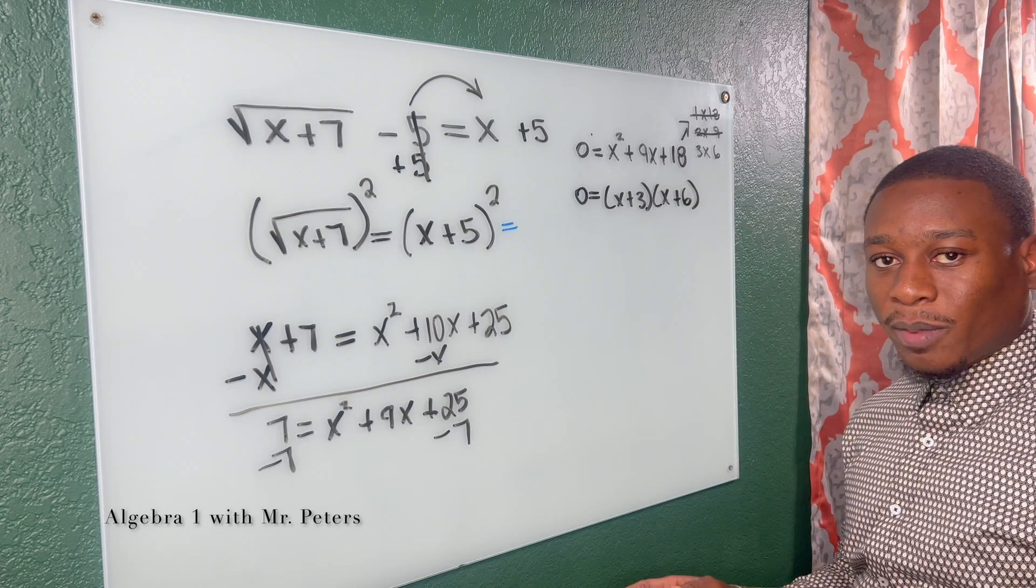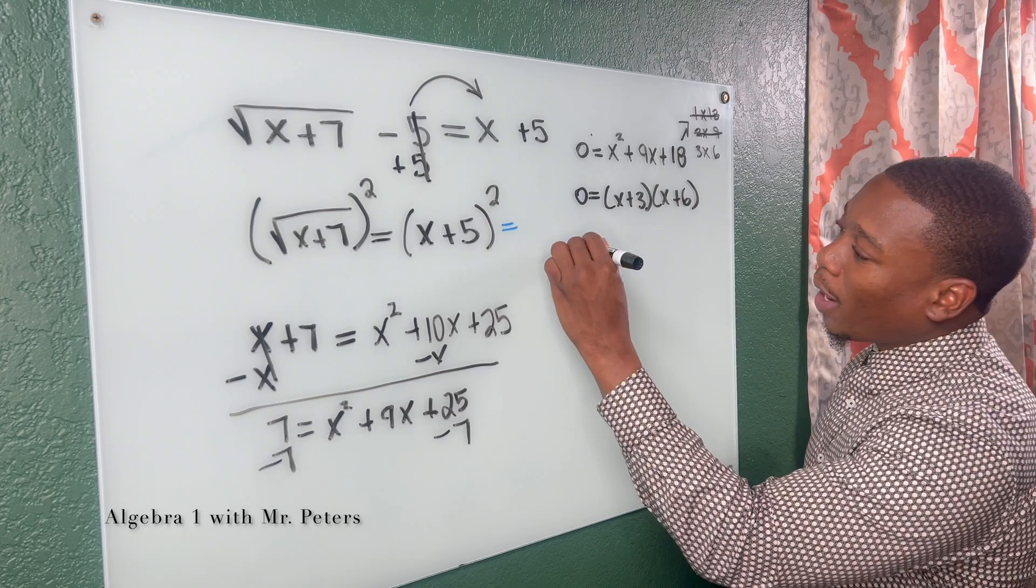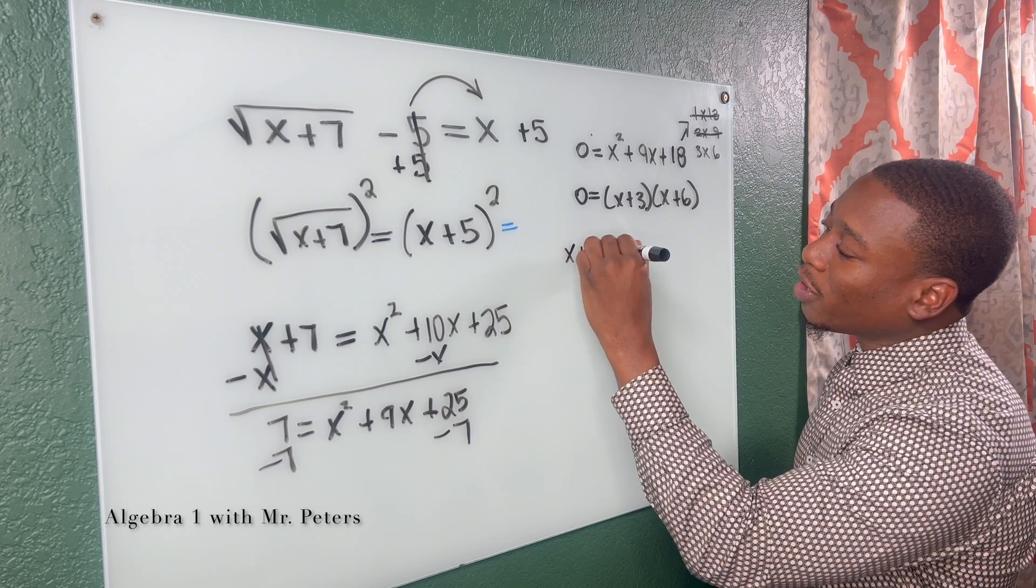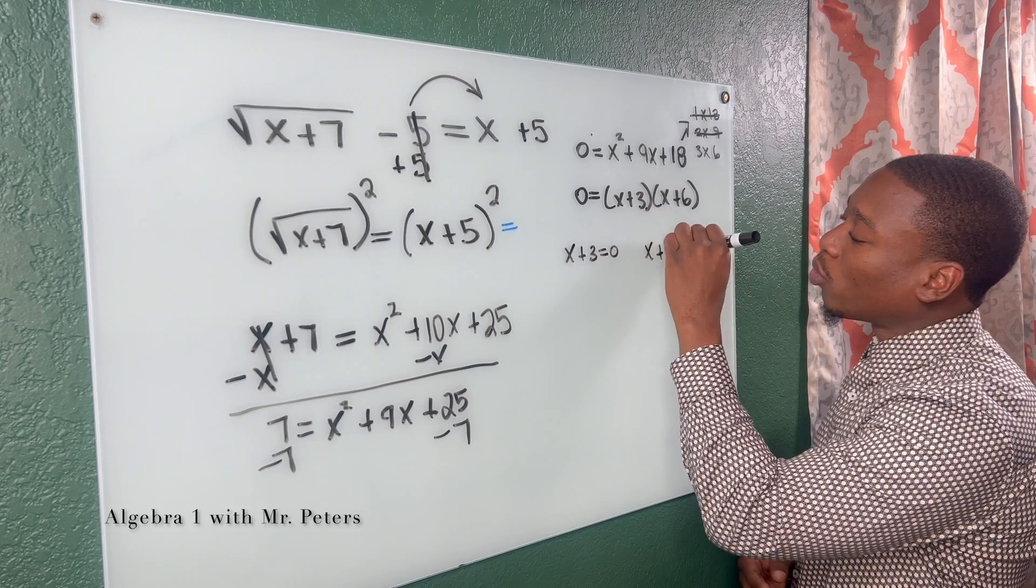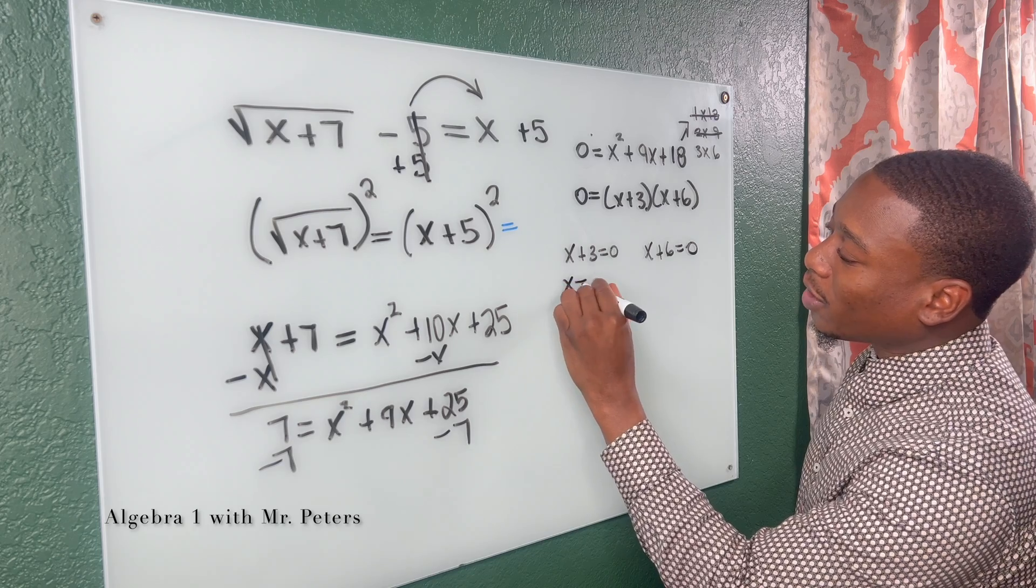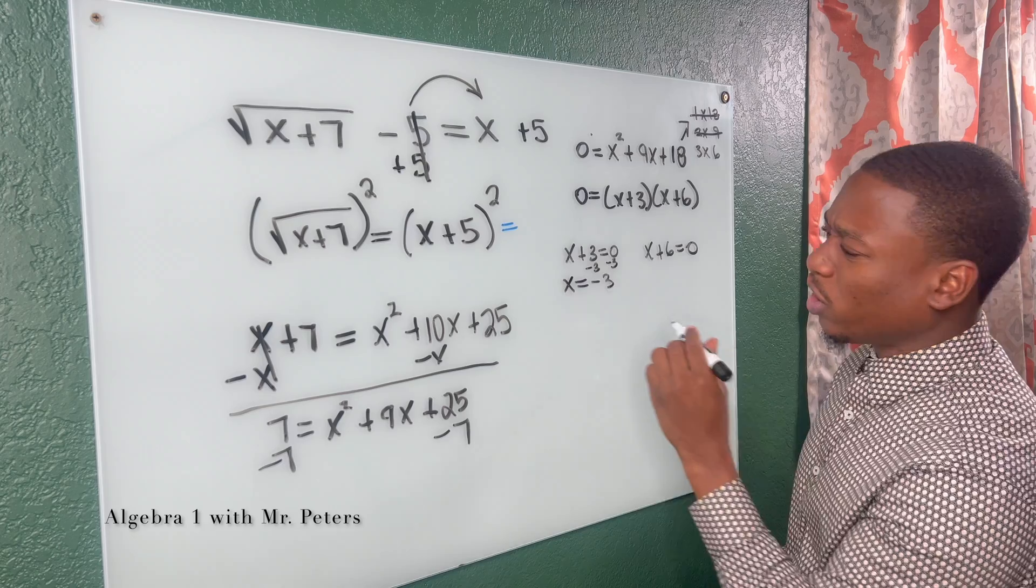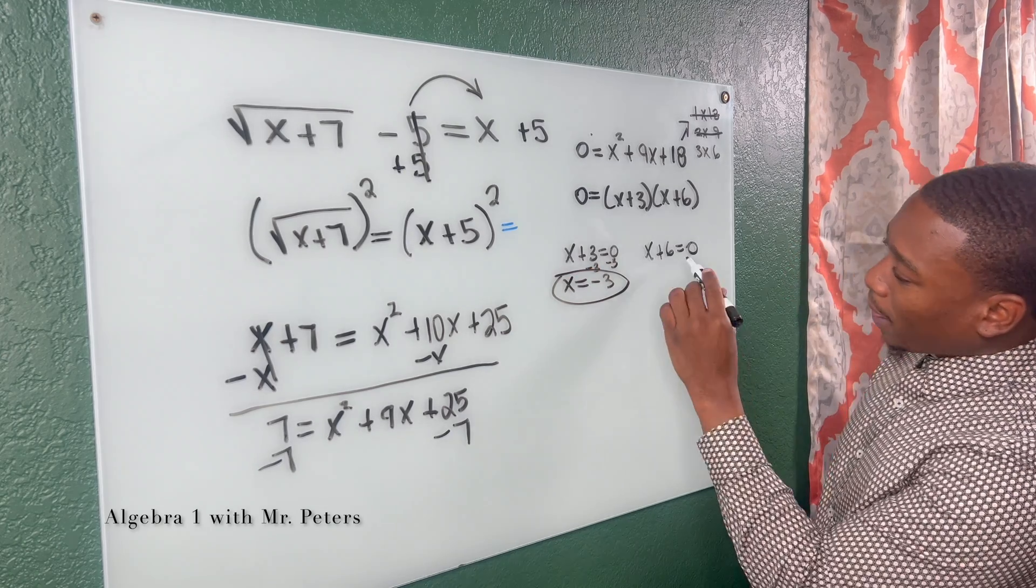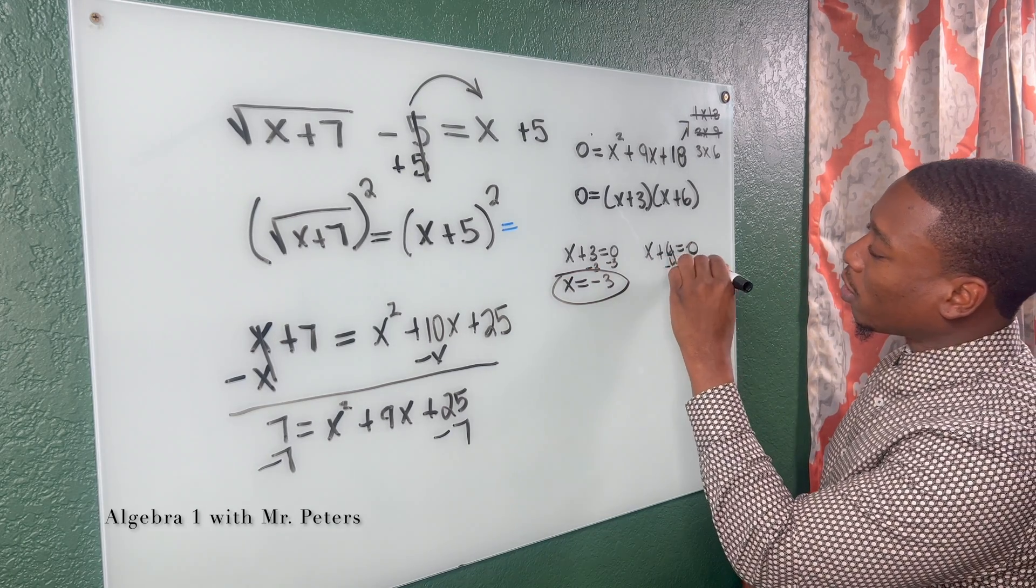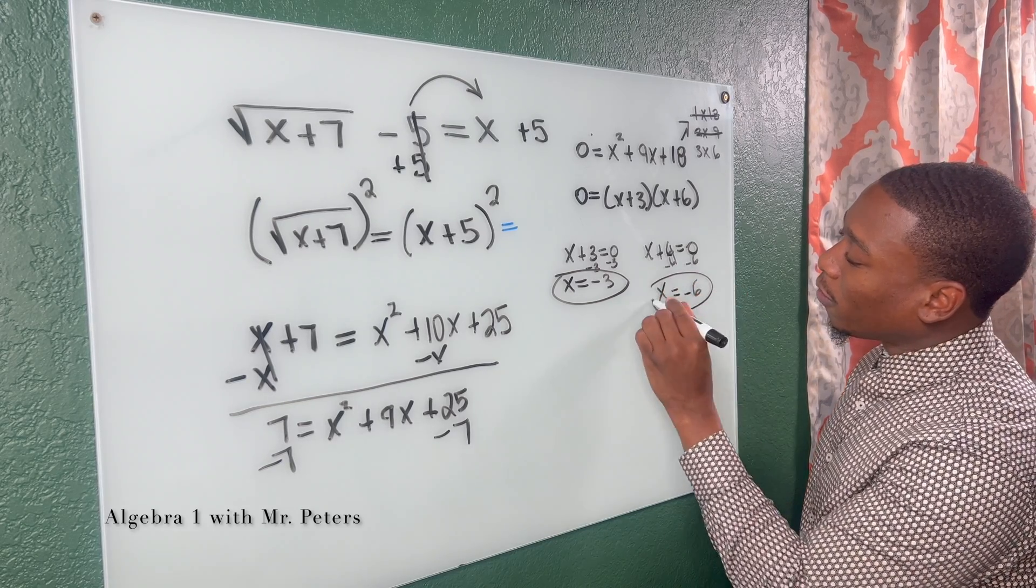Now at this step, we always set our factors equal to zero. So I have X plus three is equal to zero and X plus six is equal to zero. We solve and get X by itself. So this turns into X is equal to negative three. Just subtract three. And then on the other side, we subtract six and we'll get X is equal to negative six.